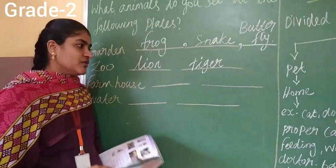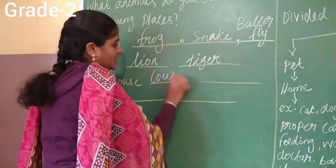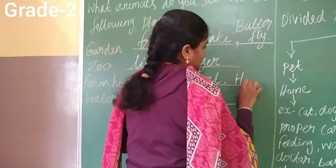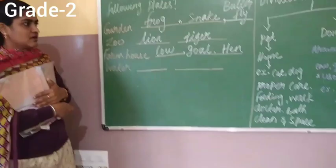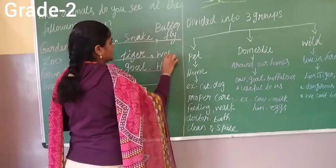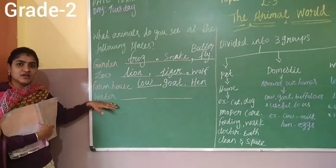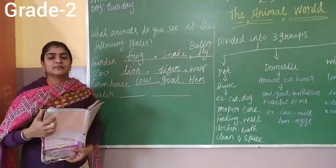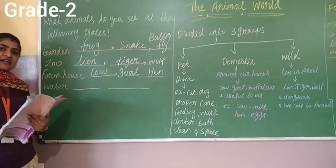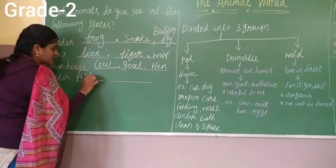In the farmhouse, what kind of animals can we see? In the farmhouse we can see cow, goat, and hen. And for water animals — which animals live in water? They are called water animals or aquatic animals. We can see fish, octopus, and dolphin in the water.